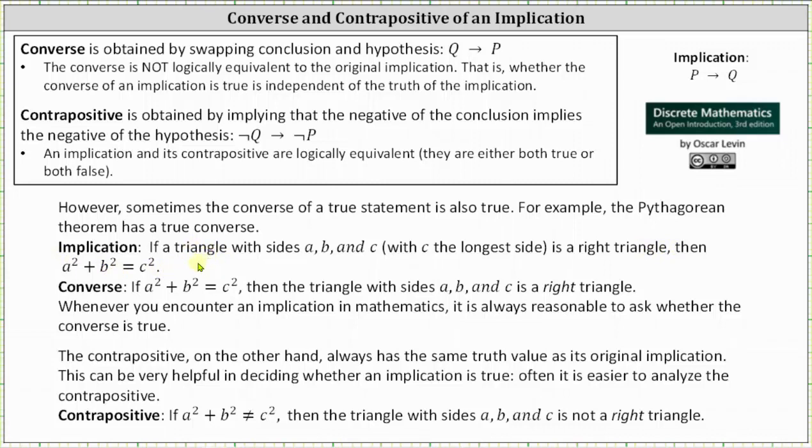The converse of this implication is if a squared plus b squared equals c squared then the triangle with sides a, b, and c is a right triangle is also true. Whenever you encounter an implication in mathematics it is always reasonable to ask whether the converse is true.